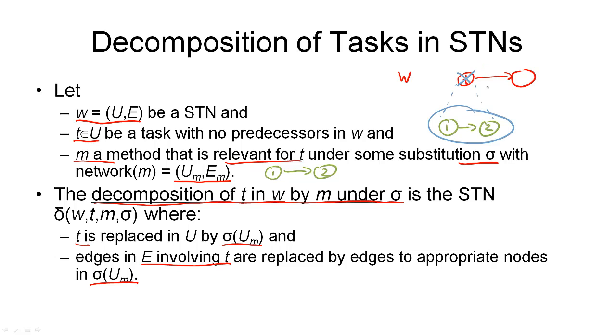And then we have to replace all the edges that were connected to T, which is this edge here. And we can replace this with edges to all the newly introduced nodes. But because we already have this edge, there's no need to have the second edge. And in this example, the resulting network would be the sequence consisting of the node one, two, and this final node here, which I'll call three. And what we have done to get to this network is we have applied the decomposition function. And the application consisted of two steps. We have replaced the node T that we're decomposing by all the nodes in the network of the method. And we have replaced all the edges that are connected to T by edges to the new nodes. And this is how you decompose a task in a task network.